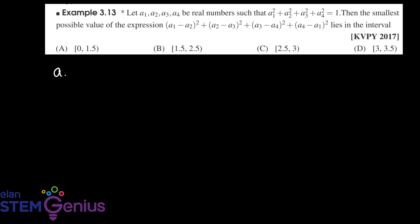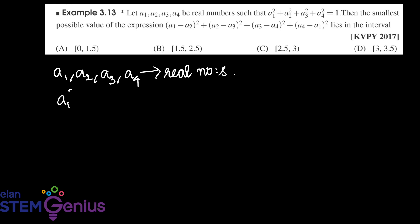We have real numbers a1, a2, a3, a4 with the constraint a1 squared plus a2 squared plus a3 squared plus a4 squared equals 1.